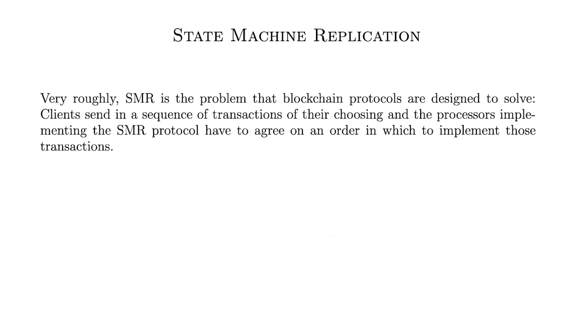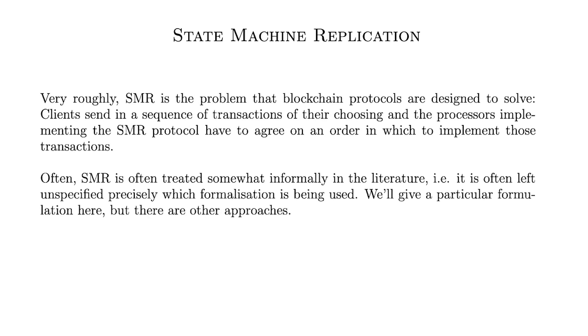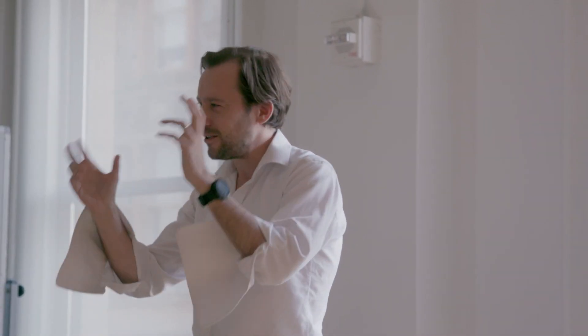State machine replication — roughly, this is just what blockchain protocols are supposed to do. You've got a bunch of clients sending in a sequence of transactions, and the processes implementing the SMR protocol have to agree on an order to implement those transactions. A word of warning: unlike Byzantine agreement and Byzantine broadcast, SMR is often treated somewhat informally in the literature, so it's not always clear exactly what formalization is being used. I'm going to write down a particular formalization, but other approaches are possible.